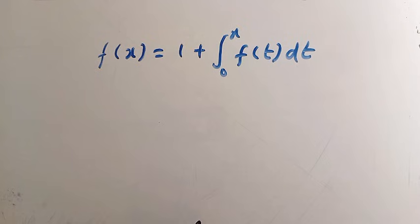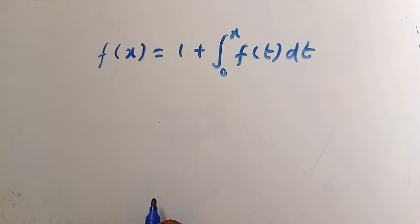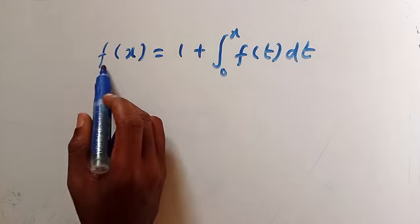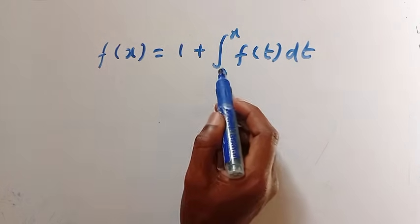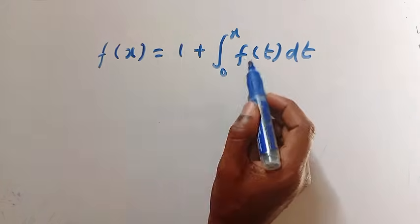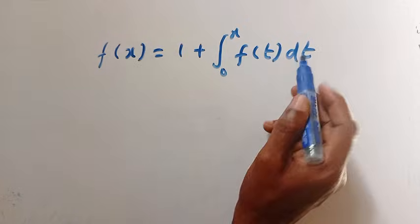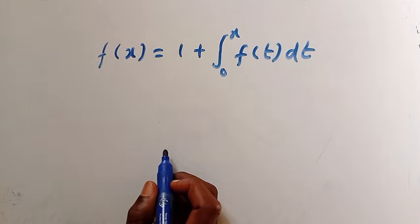Good day viewers, you are welcome. How do you solve these equations? We have f of x equals 1 plus integral from 0 to x of f of t dt, and we are interested to get f of x. How do you solve this problem?